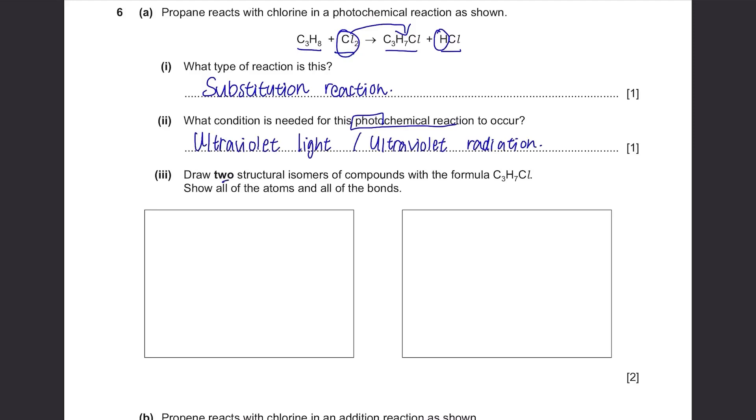Draw two structural isomers of compounds with the formula C3H7Cl. Show all of the atoms and all of the bonds. This shouldn't be very hard. First put three Cs in the middle, and the rest fill out with seven H atoms and one Cl atom. I'll put one Cl at the end, and the rest as H. Then to make it different in the second one, let's put chloride atom in the middle here, then the rest just hydrogen atoms.